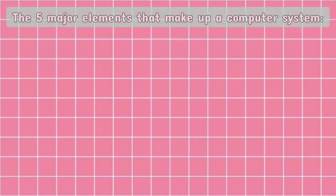There are five major elements that make up a computer system. They all interact with each other and perform the task at hand. Let us take a look at all of them.